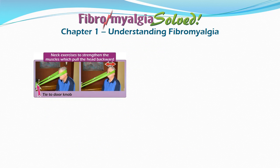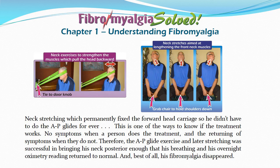Further treatments outlined in the treatment chapter were added over time, including neck stretching, which permanently fixed the forward head carriage so he didn't have to do the AP glides forever. Why stretching is permanent and exercise is temporary is discussed in the treatment chapter. This is one of the ways to know if a treatment works: no symptoms when a person does the treatment, and a return of symptoms when they do not. The AP glide exercises and later stretching successfully brought his neck posterior enough that his breathing, his overnight oximetry reading, and his fibromyalgia all returned to normal.